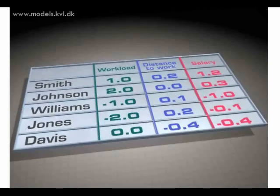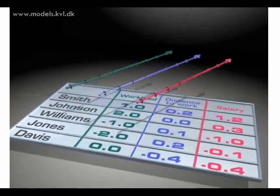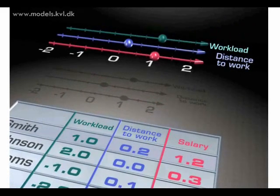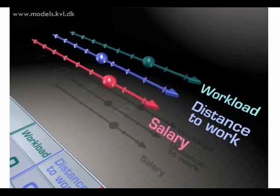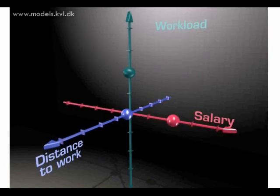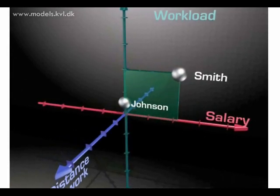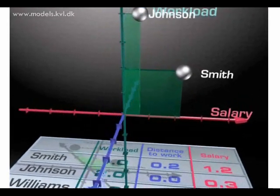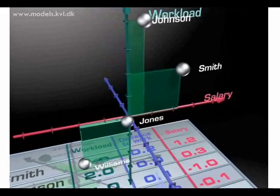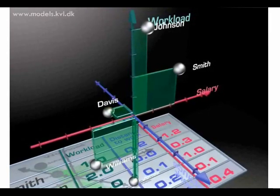Here we see a table of data — five samples and three variables. Every sample can be represented by a three-dimensional coordinate system. If we look at Smith, he has workload one, so we can add a point on the green axis representing Smith's workload. And if we plot the coordinate system in a normal fashion, every sample will be represented by one point. We can add all the remaining samples in this coordinate system, and that way we get an exact representation of what we know from the data table in this coordinate system.